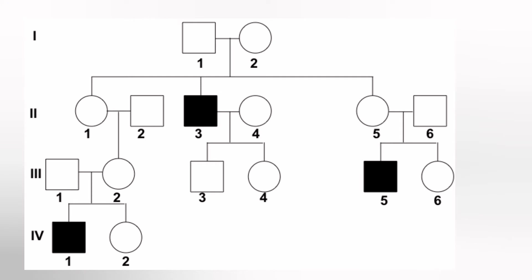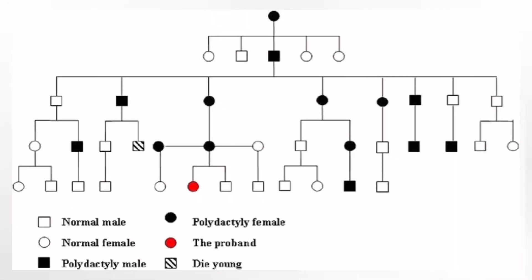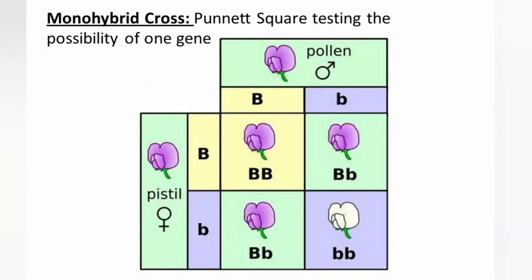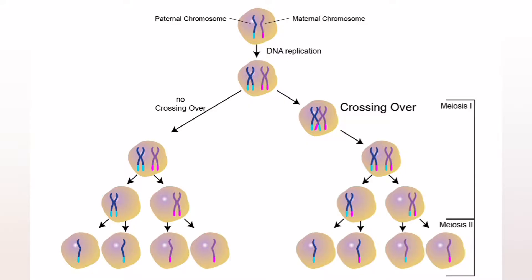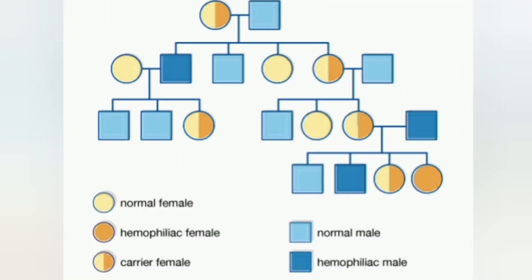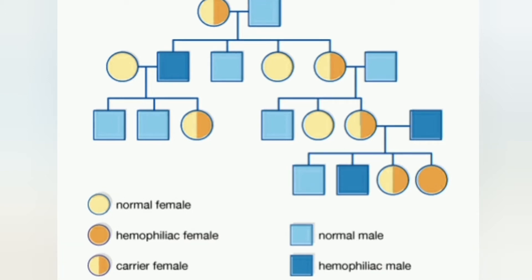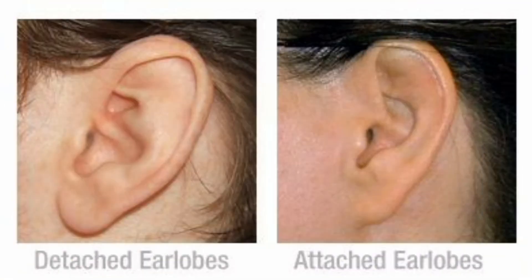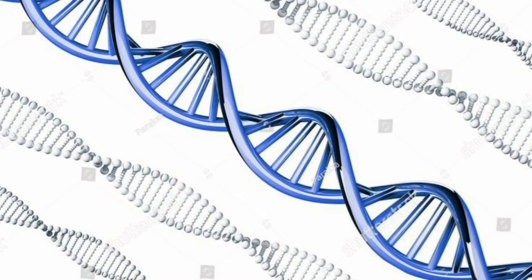The principle of inheritance of traits given by Mendel, which you have already read, is applicable to plants, animals, and human beings. However, the type of crossing that was done on plants and animals cannot be performed on humans. So a record of inheritance of certain genetic traits for two or more generations, in the form of a diagram or family tree, is called the pedigree chart. This chart is prepared to analyze various types of diseases or traits in humans.